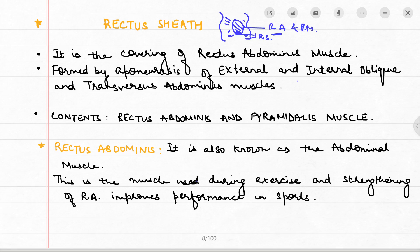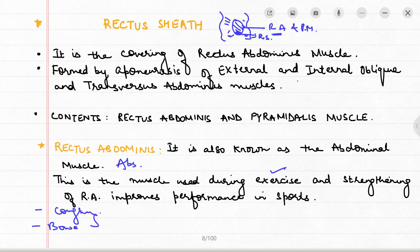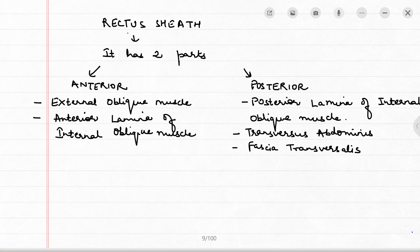The rectus abdominis is also known as the abs. It is used in exercise, and strengthening it improves performance in sports. This muscle is also used during coughing, bowel movements, and childbirth. The rectus sheath has two parts: the anterior part has the external oblique and the anterior lamina of the internal oblique; the posterior part has the posterior lamina of the internal oblique, the transversus abdominis, and the fascia transversalis.